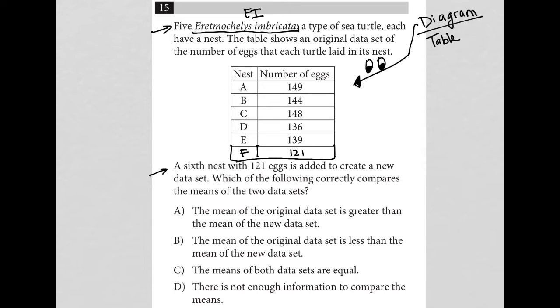All right, so now we'd have A through F instead of just A through E. The question goes on to say which of the following correctly compares the means of the two data sets. Okay, so if we just use a little bit of logic, we could say well, the mean here is most likely in the low 140 range, right?